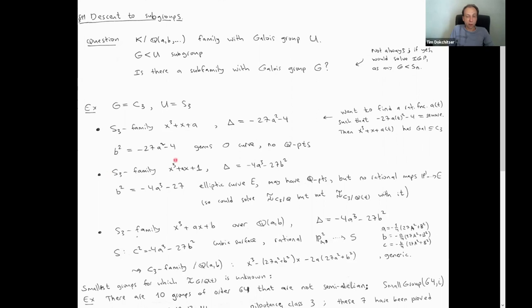Let's take another S3 family: x³ + ax + 1. Now the discriminant is −4a³ − 27. Can this expression be a square? Setting it equal to b² gives b² = −4a³ − 27, which is an elliptic curve — a genus-one curve. It may have rational points, so it's quite possible to find specific rational values of a making it a square.